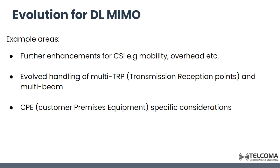Let's discuss the evolution of downlink MIMO. The example areas for evolution include: further enhancements for channel state information such as mobility overhead, evolved handling of multi-transmission reception points and multi-beam, and CPE (customer premises equipment) specific considerations.